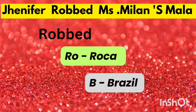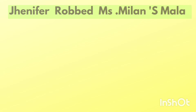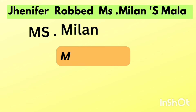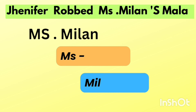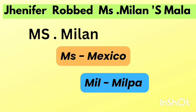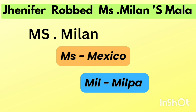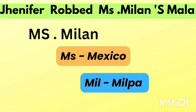Now look at the word 'Miss Millen.' Take 'Miss' — it rhymes with 'Mex,' giving us Mexico. So 'Miss' represents Mexico. Then M-I-L stands for Milba. So in Mexico, shifting cultivation is called Milba.